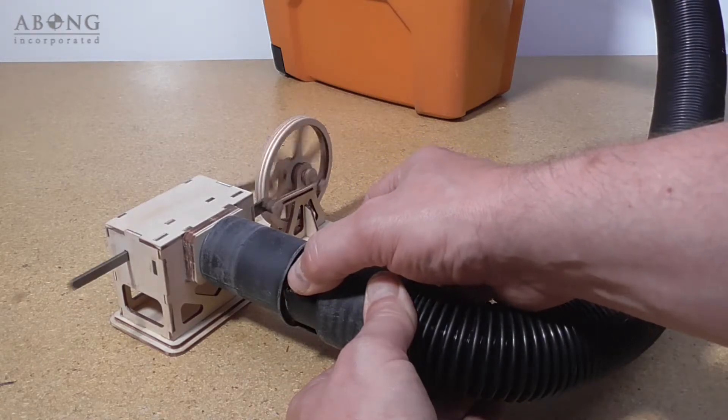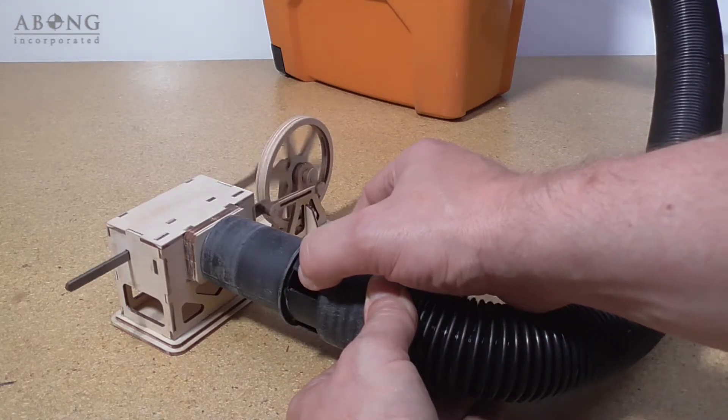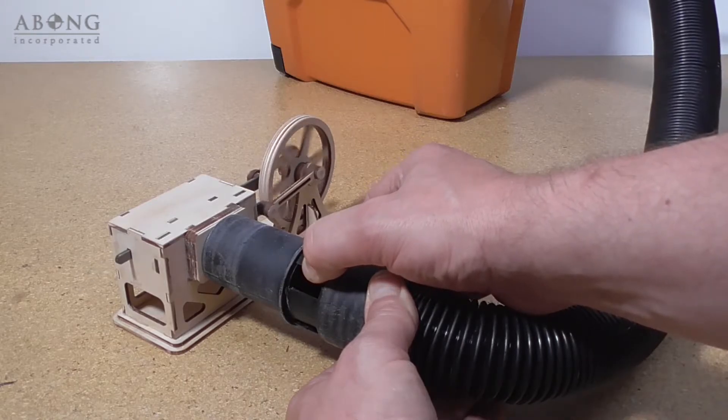Some nozzles have a bypass valve that you can use to adjust the speed that the engine runs at.